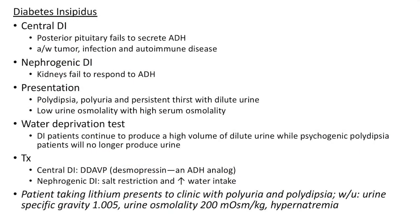Now let us discuss about diabetes insipidus. There are two types: central and nephrogenic diabetes insipidus. Central diabetes insipidus is when the posterior pituitary fails to secrete antidiuretic hormone; it is associated with tumor, infection and autoimmune disease. In nephrogenic diabetes insipidus, the kidneys fail to respond to ADH. Clinical features include polydipsia, polyuria and persistent thirst with dilute urine, along with low urine osmolality and high serum osmolality.